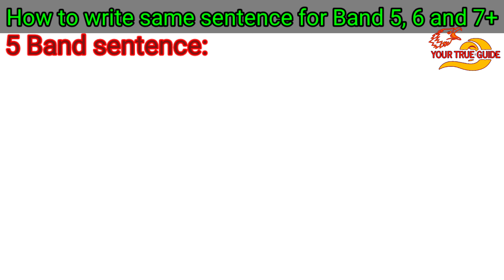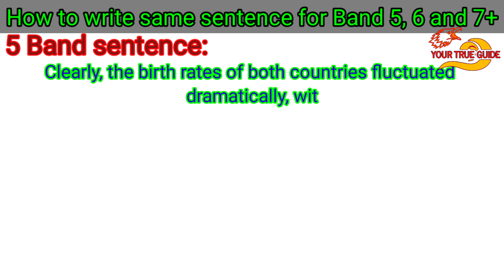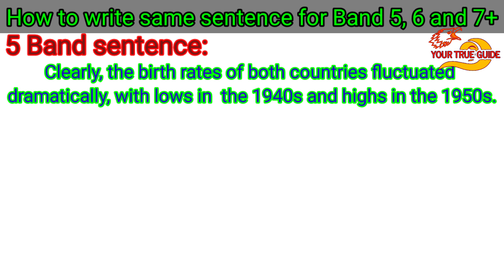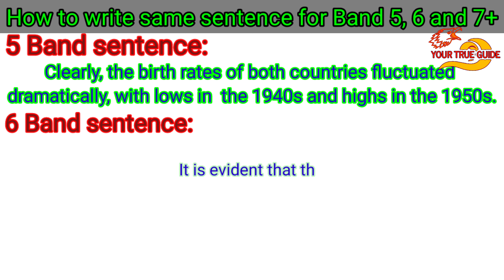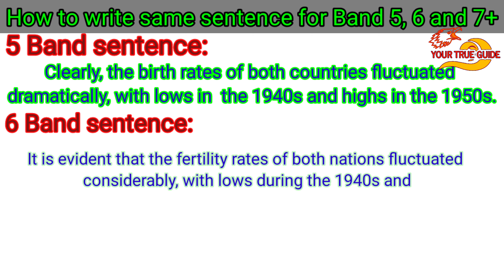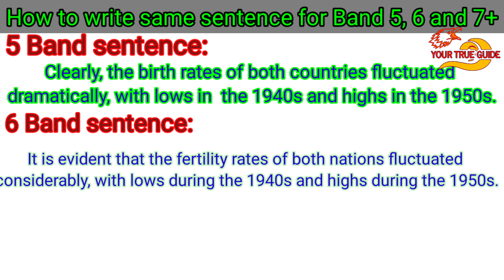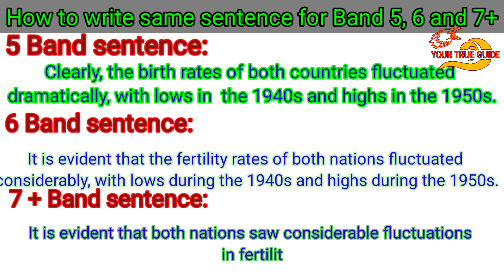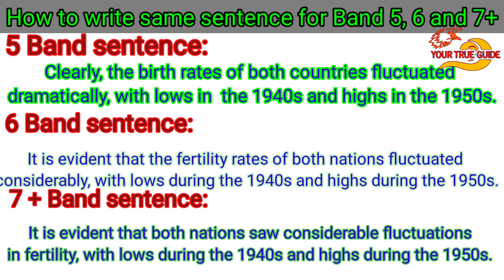The next sentence for 5 bands is: 'Clearly, the birth rates of both countries fluctuated dramatically, with lows in the 1940s and highs in the 1950s.' For 6 bands: 'It is evident that the fertility rates of both nations fluctuated considerably, with lows during the 1940s and highs during the 1950s.' For 7 plus band formation: 'It is evident that both nations saw considerable fluctuations in fertility, with lows during the 1940s and highs during the 1950s.'